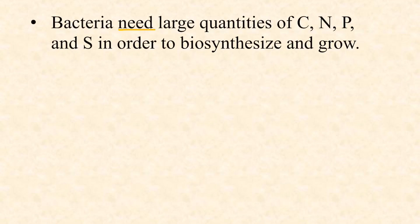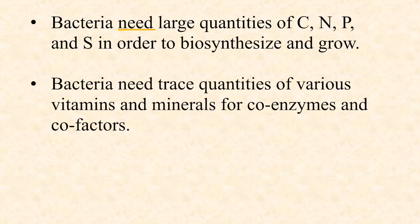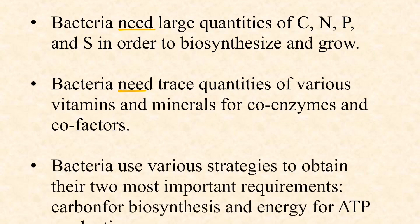However, bacteria are found in every one of these categories on Earth — they are very diverse in their metabolism. To summarize: bacteria require large quantities of carbon, nitrogen, phosphorus, and sulfur to biosynthesize and grow and thus cause an infection. They also require trace quantities of various vitamins and minerals for coenzymes and cofactors. Finally, they have diverse strategies for obtaining carbon and energy — the most important category among human pathogens being the chemoheterotrophs.